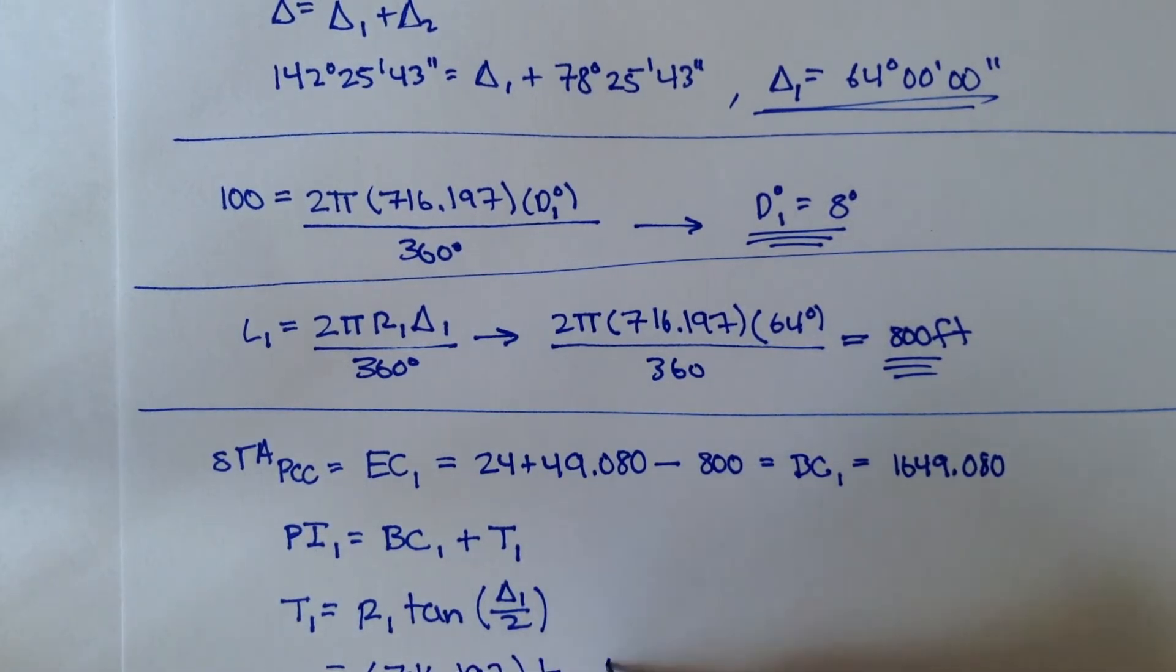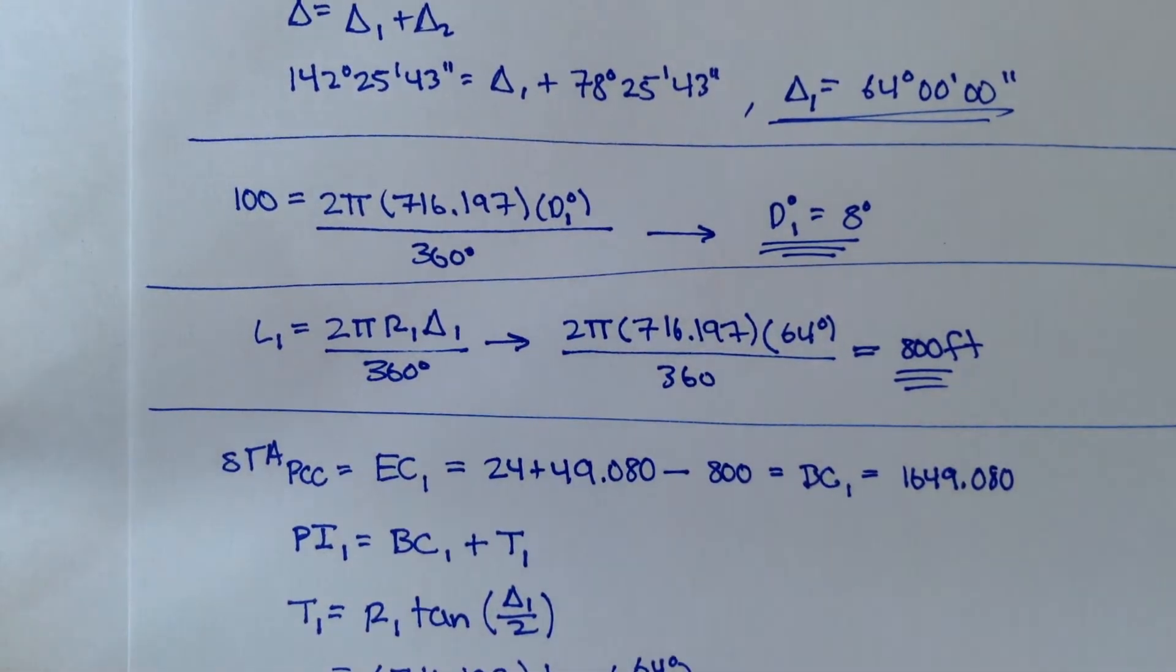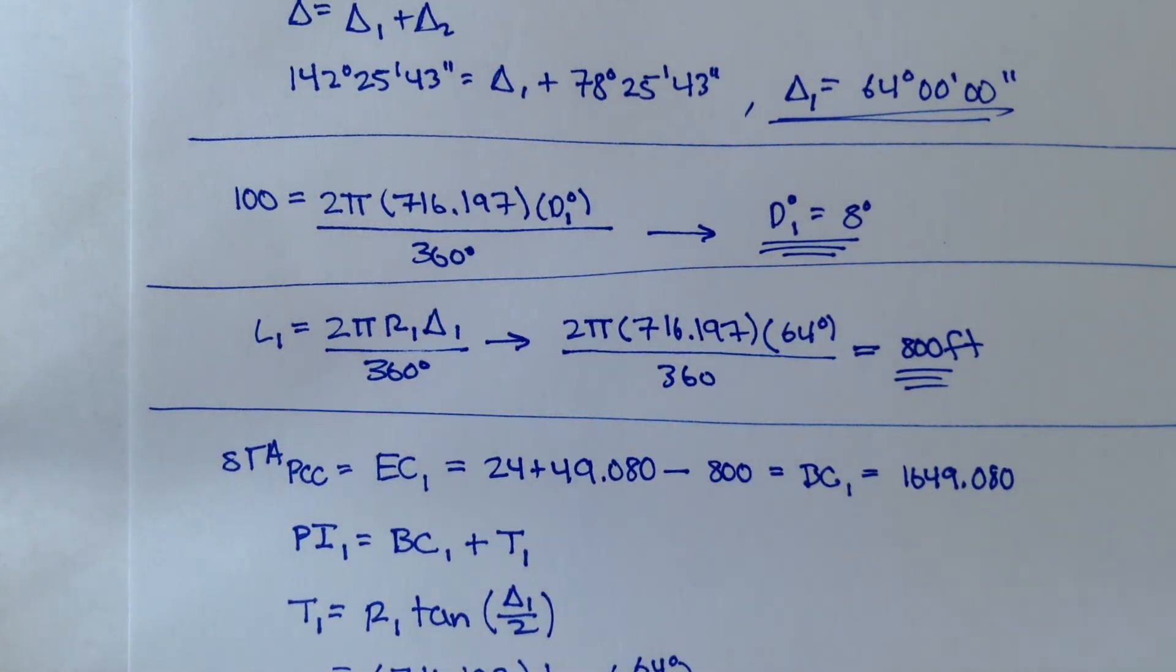Radius 1 is given in the problem 716.197, right? And then tangent of delta 1, which was that nice 64 degrees, divided by 2. Plug this in, T1 becomes 447.5530.